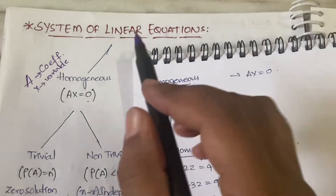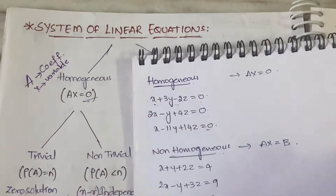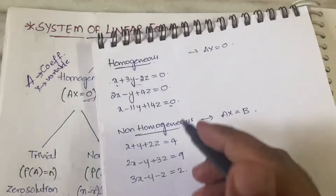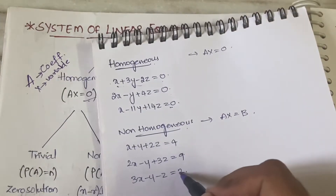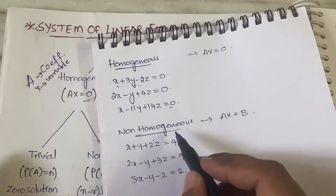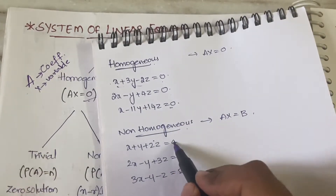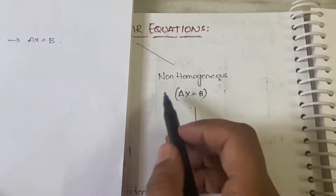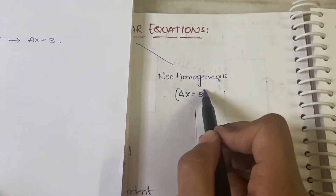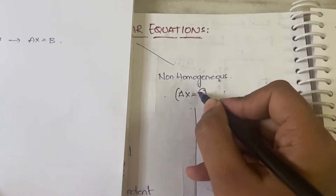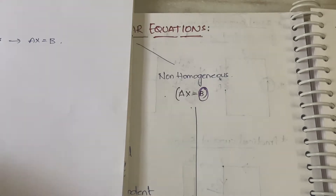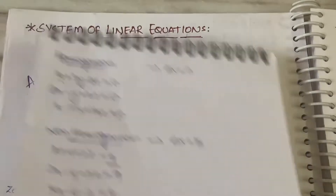In homogeneous, every equation is set equal to zero. Instead of zero, if the equations are equated to some constant term like four, nine, or two, that is called non-homogeneous. The constant matrix here is referred to as matrix B.